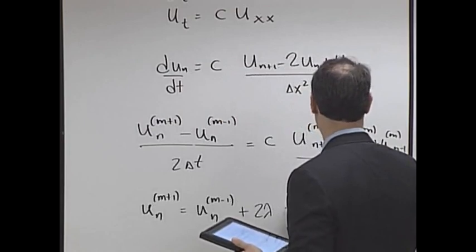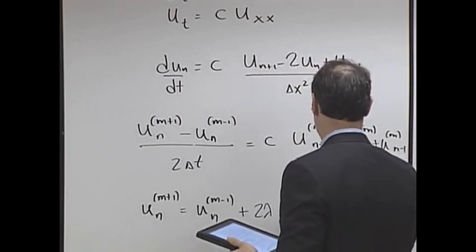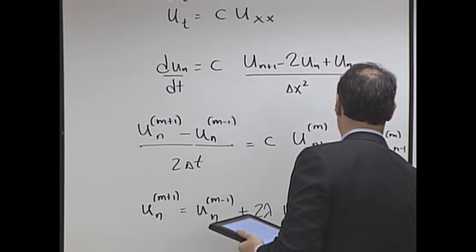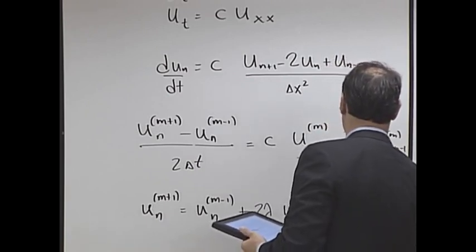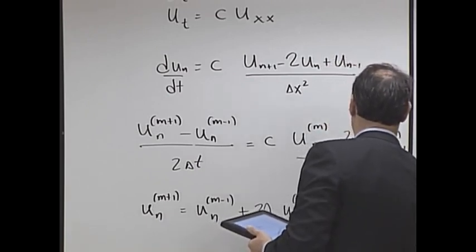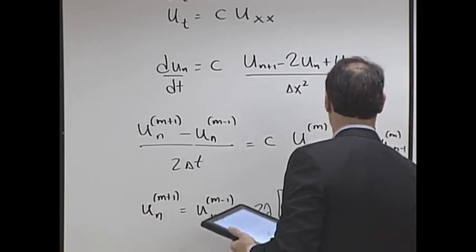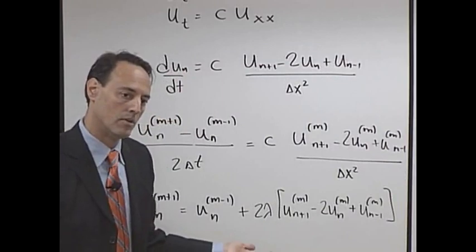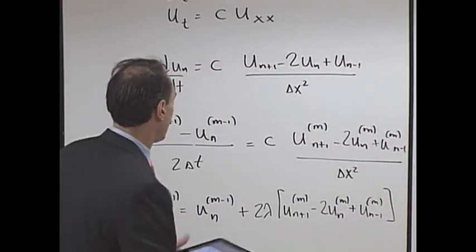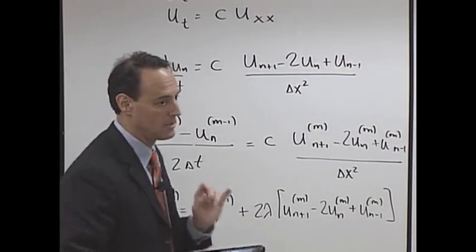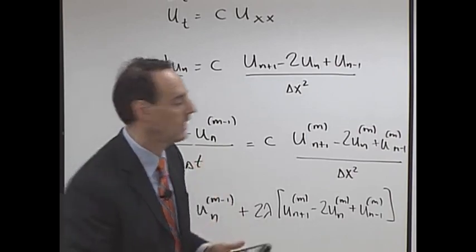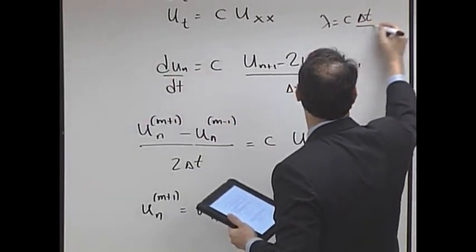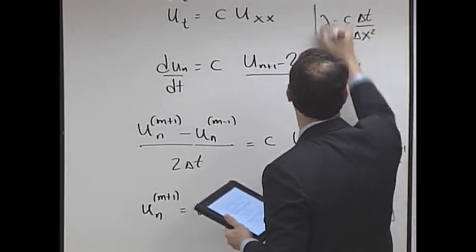And I'm going to have my scheme. The point in the future is what it was one time ago, plus two lambda. And I'll tell you what lambda is in a minute: u_{n+1,m} - 2u_{n,m} + u_{n-1,m}. There you go, there's your leapfrog scheme for the derivative.